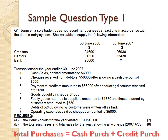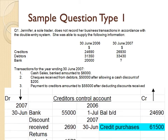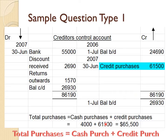Now that we have credit purchases of $61,500, total purchases equals cash purchases plus credit purchases. Cash purchases is Point 4 — goods bought by check — $4,000. So $4,000 plus $61,500 gives us total purchases of $65,500, which goes to the trading account.